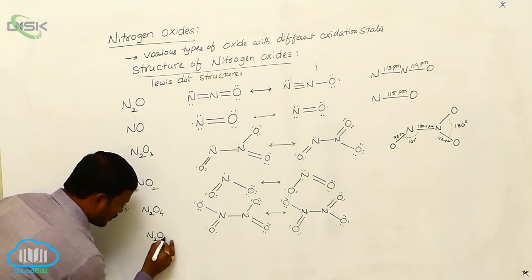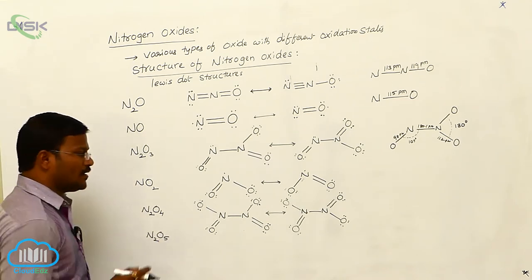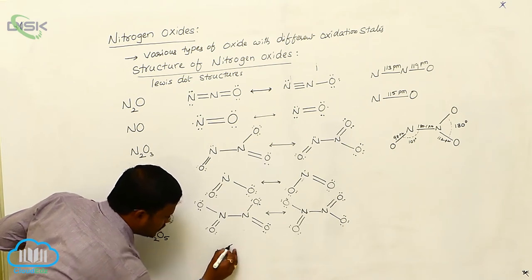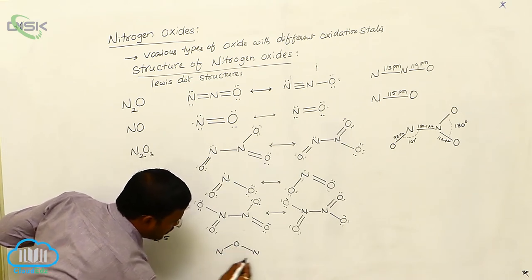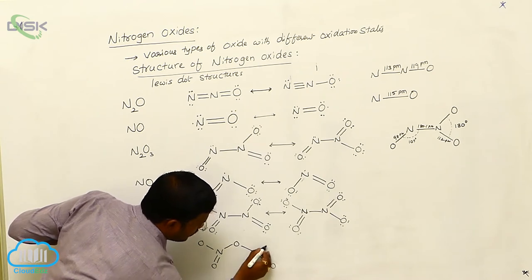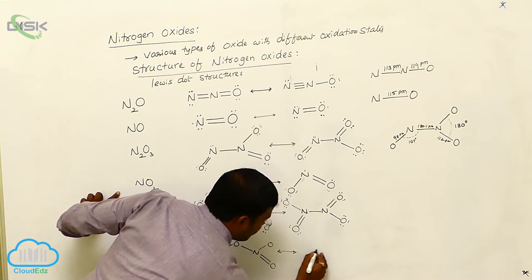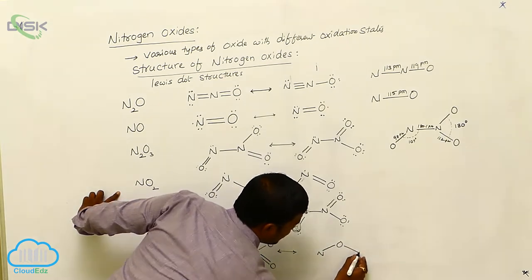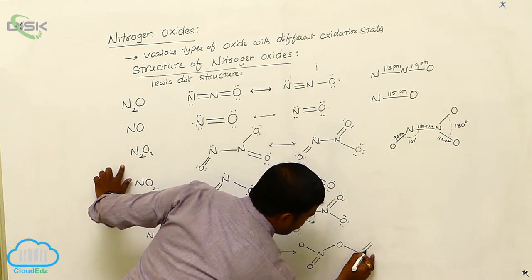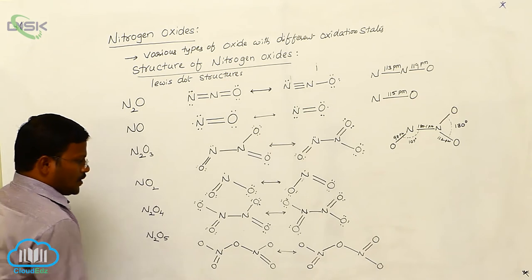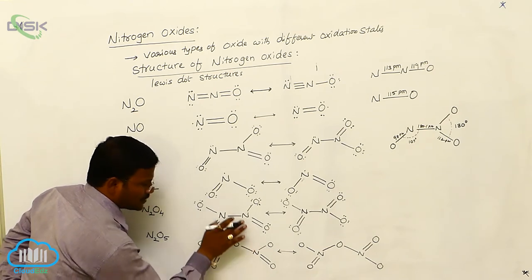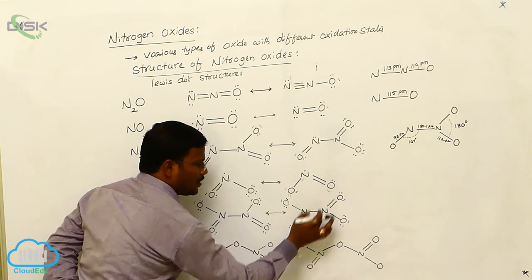The last oxide is N₂O₅, dinitrogen pentoxide or nitrogen 5 oxide. This compound shows the geometry O–N double bond O–O–N double bond O, with two resonance forms available. In the first resonance form, the two double-bond oxygens are on the same side. In the second resonance form, the double bonds are on opposite sides.